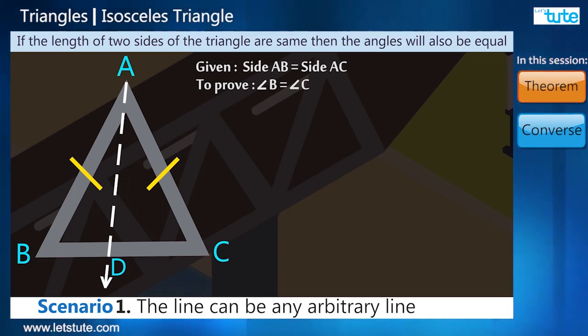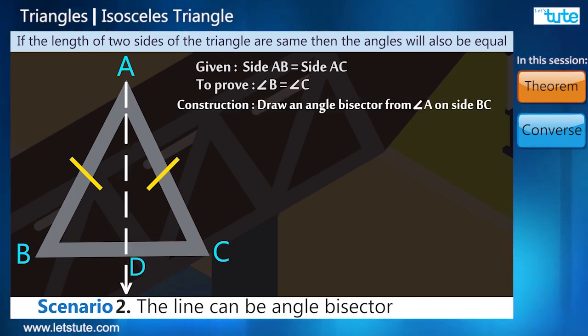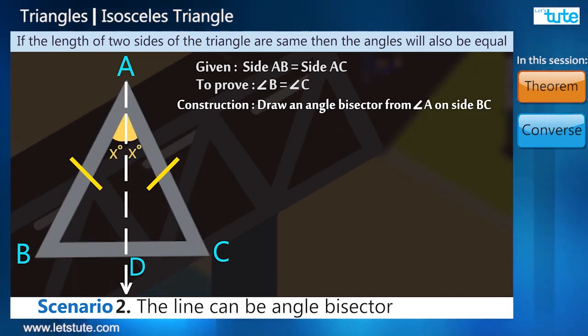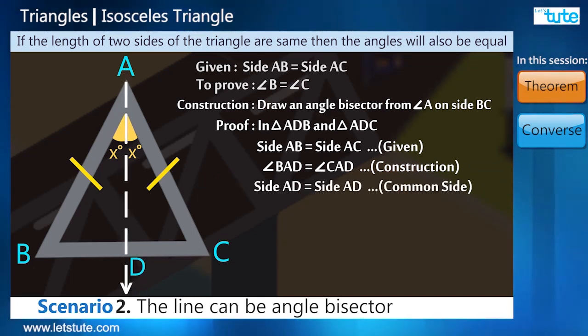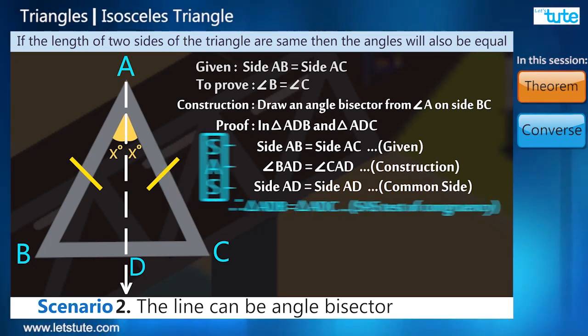She explained three scenarios. First, this line can be any arbitrary line. This will not help us at all as we will not get any sides or any angles equal. The second scenario where this line can be an angle bisector. Well, angle bisector divides one angle into two equal angles and because of this we will get one angle equal and there will be a common side. Now the triangles will be equal using the SAS criteria of congruency and the angles will be equal by the corresponding angle property.